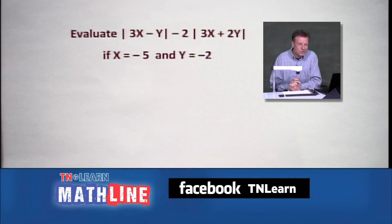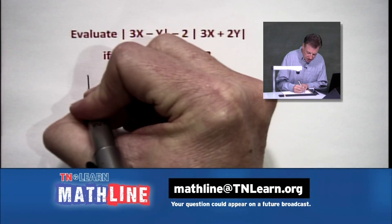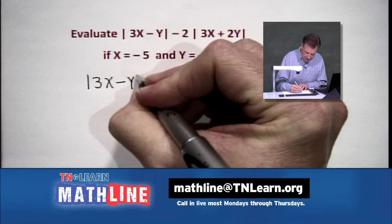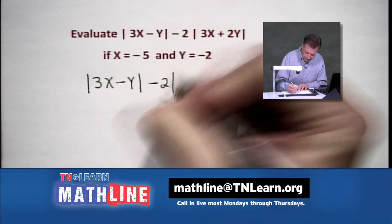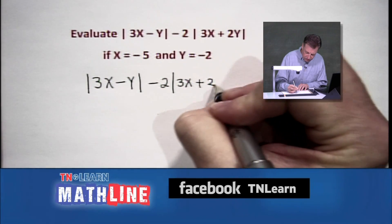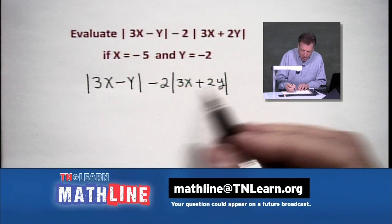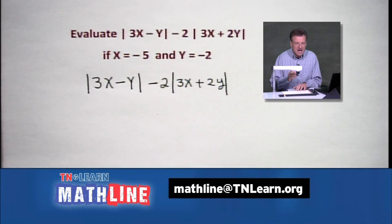Now it's a pre-algebra exercise where we substitute values of x and y. We're going to rewrite this: absolute value of (3x minus y), then subtract two times the absolute value of (3x plus 2y). Let's work left side and right side separately.